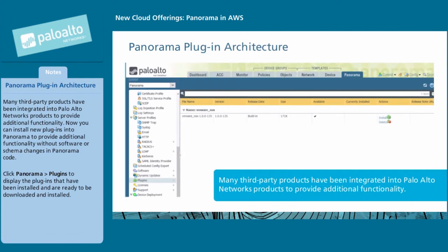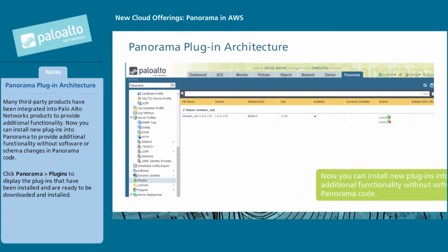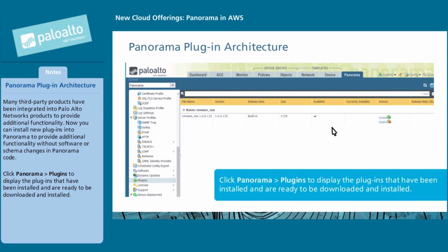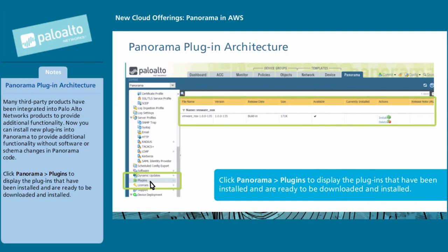Many third-party products have been integrated into Palo Alto Networks products to provide additional functionality. You can now install new plugins into Panorama to provide additional functionality without software or schema changes in Panorama code. Click Panorama Plugins to display the plugins that have been installed and are ready to be downloaded and installed.